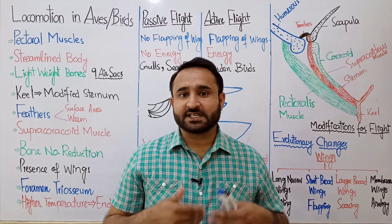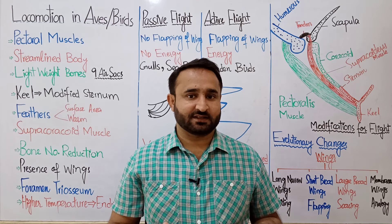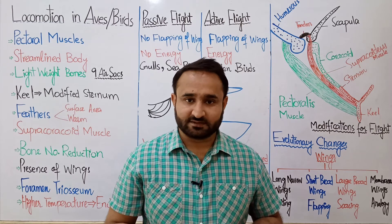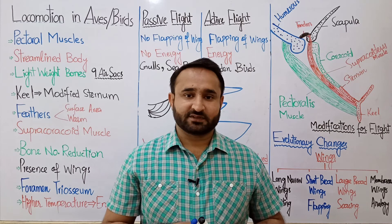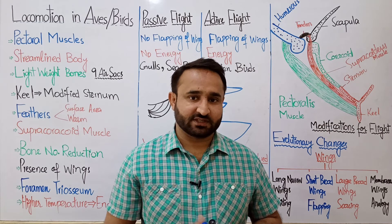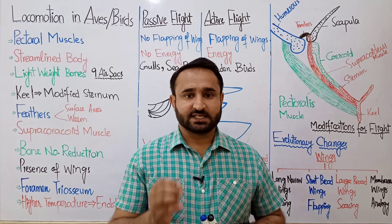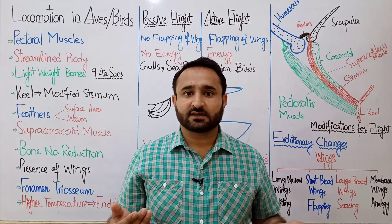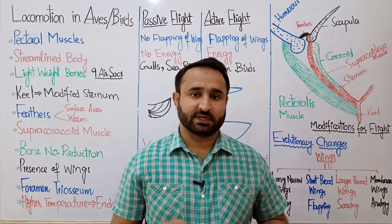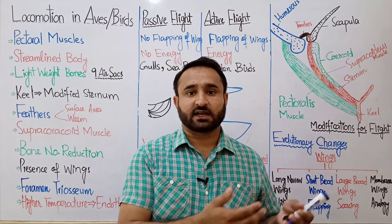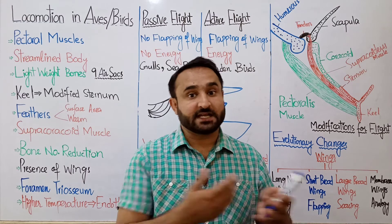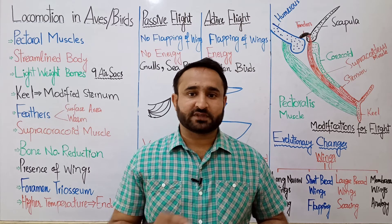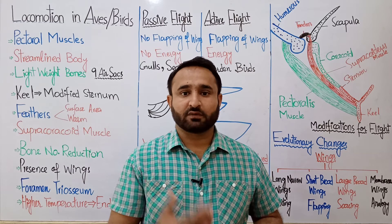In birds, the locomotion is flight — they are flying in the air, and this locomotion is called flight. For flight, birds have different adaptations. Adaptations mean changes to meet requirements, and here the requirement is flying in the air. Flight is a highly energetic mechanism, and for this energy, birds have many changes. We will see them one by one.